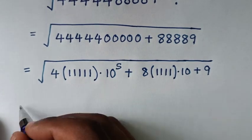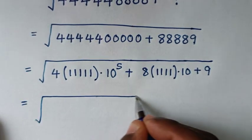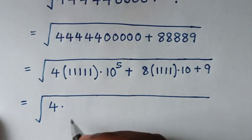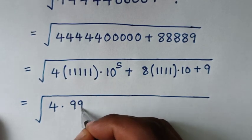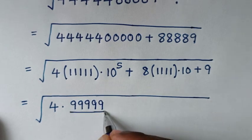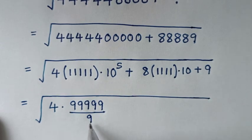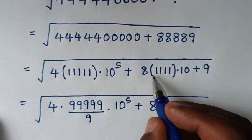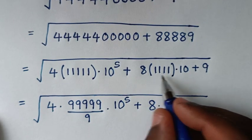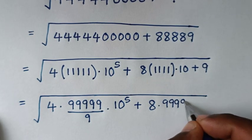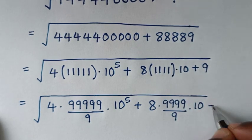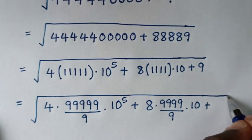In the next step, it will be equal to the square root of 4 times — there are five 1s which is the same as 99999/9 — times 10 to the power 5, plus 8 times 9999 divided by 9, times 10, plus 9.